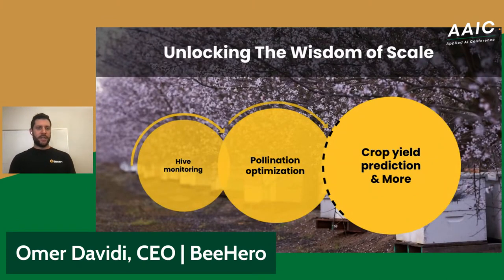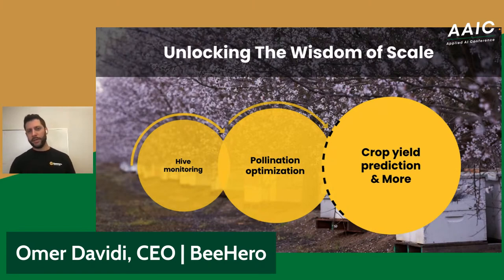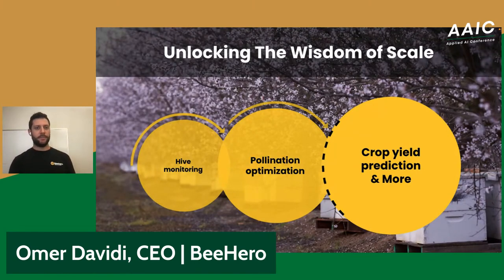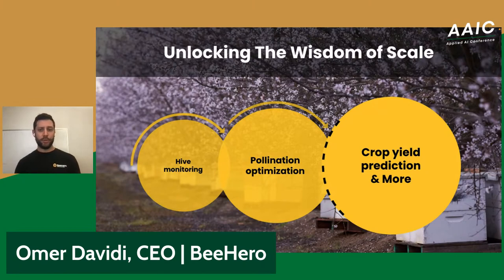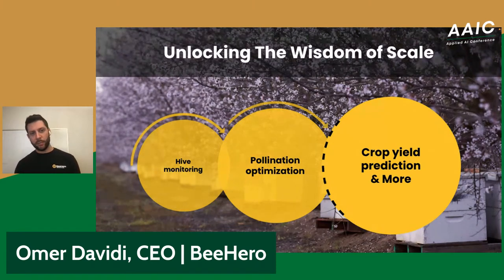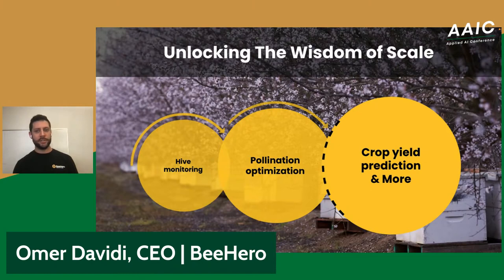Looking back at how we started with hive monitoring — identifying whether the queen was performing well, whether there were mite problems — once we scaled, we understood we could actually measure pollination activity. This opened a new world servicing not just beekeepers but also growers. As we scaled measuring pollination activity, we started working with seed producers and other companies to explore whether we could build yield assessment models based on pollination activity. From what scale can you understand where markets are going?